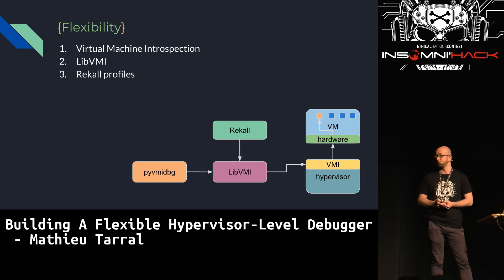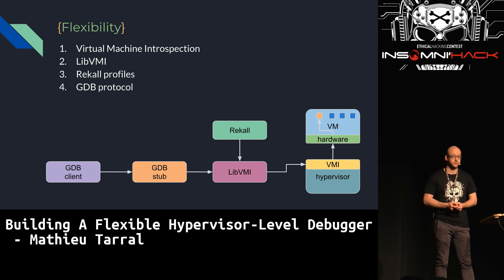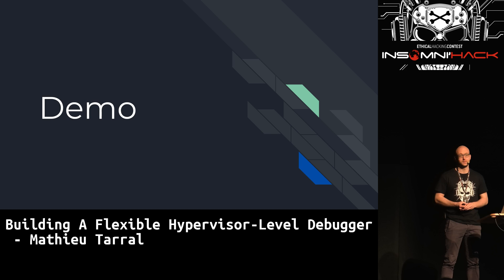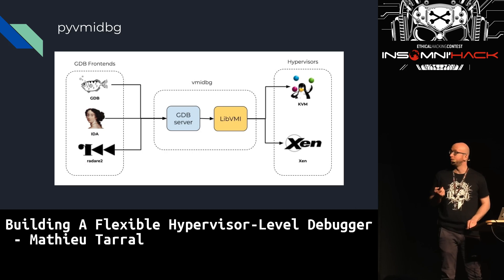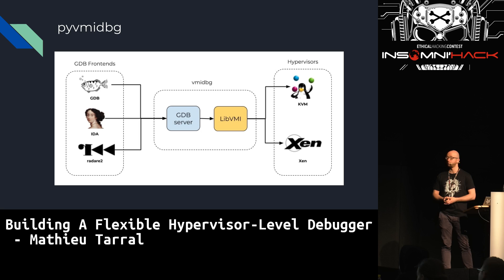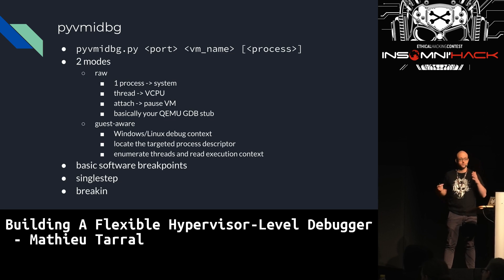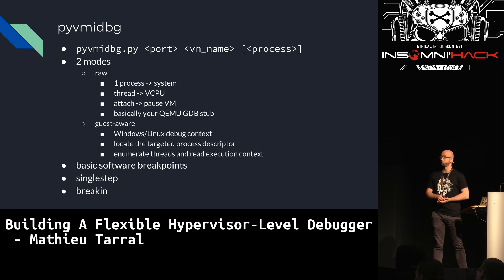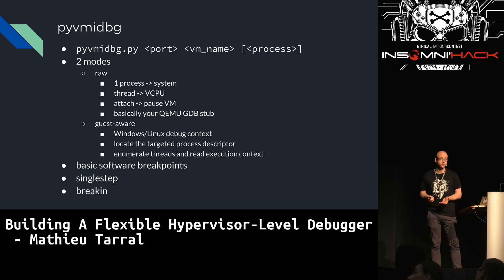So let me do a quick recap of the project. I'm using VMI to query hardware state, libVMI to be hypervisor-agnostic, a Rekall profile to make sense of raw data and read structures in memory, and the GDB protocol so I can use any GDB frontend on top. The project is pyvmidbg — a Python GDB stub on top of libVMI which bridges the gap between frontends and hypervisors. You specify a port, a VM name, and optionally a process. It has two modes: a raw mode where the process is assimilated as the entire system — a thread is mapped to one vCPU — and when you attach to the VM it just pauses it.